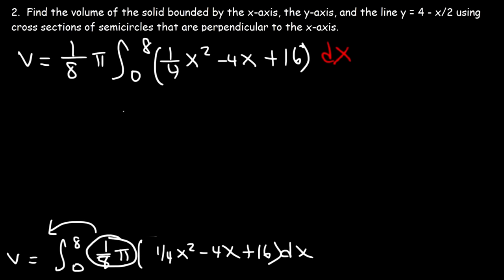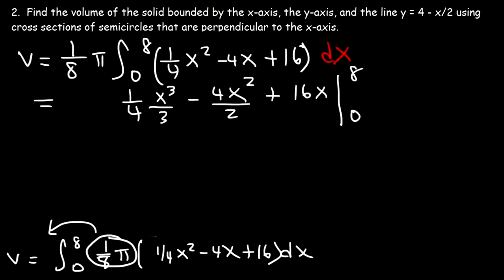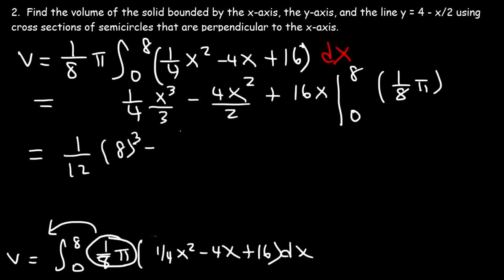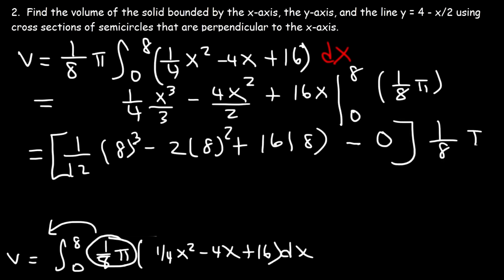Pulling the constant out, the volume equals one-eighth pi times the integral from 0 to 8 of (one-fourth x squared minus 4x plus 16) dx. The antiderivative is one-fourth x cubed over 3, minus 4x squared over 2, plus 16x, evaluated from 0 to 8. Plugging in 0 gives 0. Distributing the one-eighth to each term cancels one factor of 8 from each, simplifying the calculation.